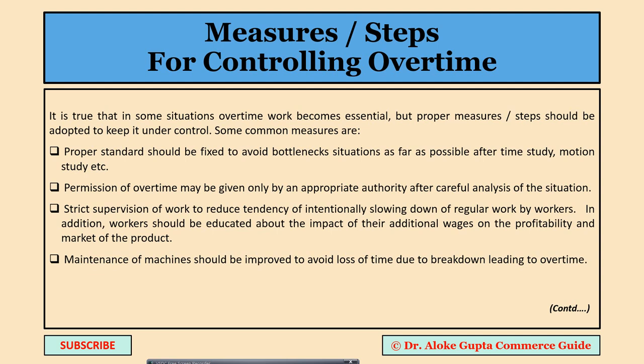The next measure is strict supervision of work to reduce the tendency of workers intentionally slowing down their regular work. Workers may intentionally slow down during normal working hours so they will be allowed to work overtime and earn extra money. This tendency should be restricted through strict supervision.